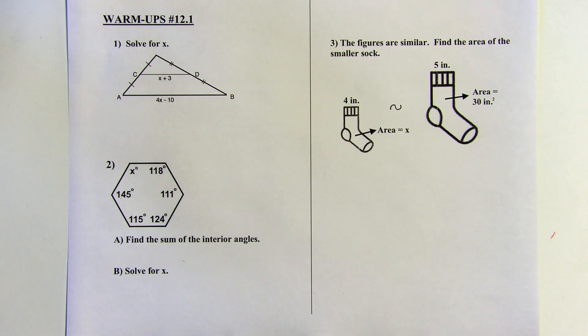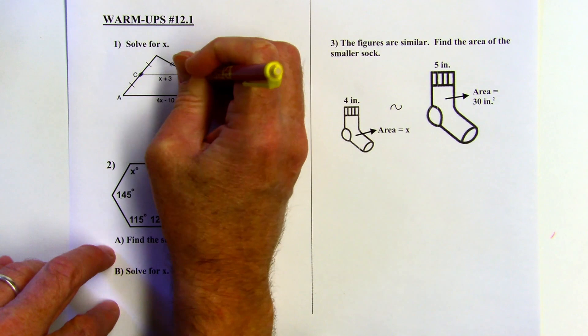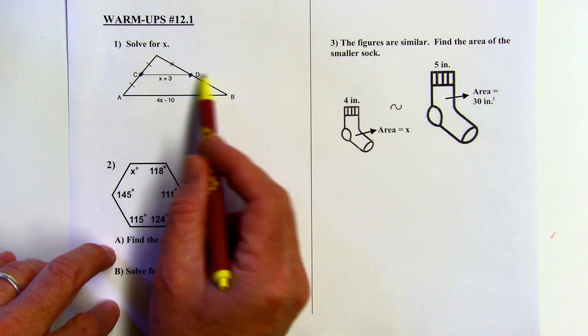Okay, here is warm-up 12.1. I've got a triangle here. I'm going to solve for X. So if you look at points C and D, these are both midpoints of those two sides. So that means that this segment here is a mid-segment.